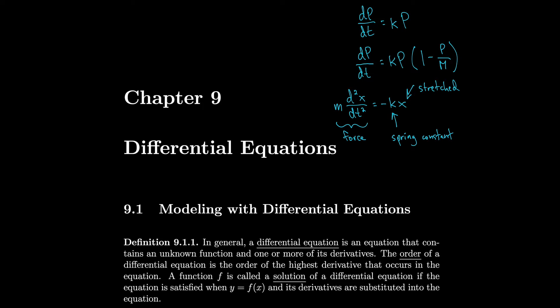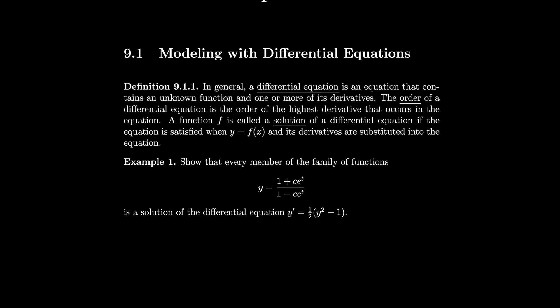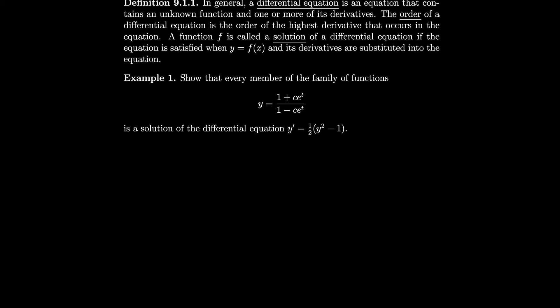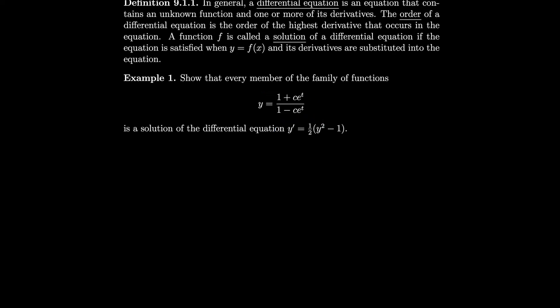Before we get to modeling, let's do a couple of examples to work with the definitions. We'll start by showing that every member of the family of functions y equals (1 + ce^t) / (1 − ce^t) is a solution of the differential equation y′ = ½(y² − 1). We need to take y′ and verify that it matches this differential equation.